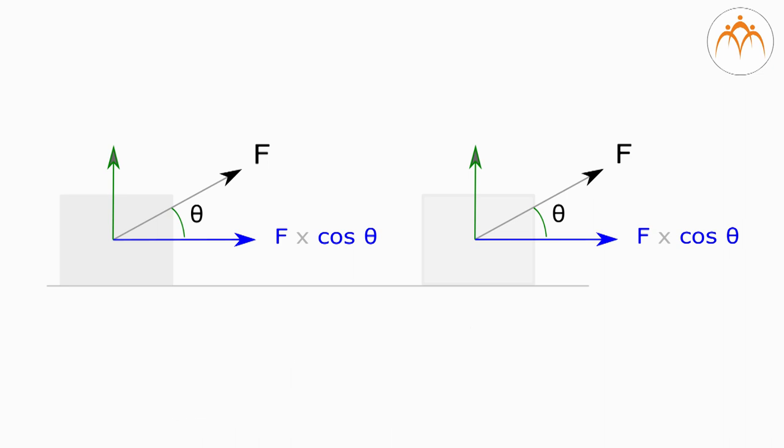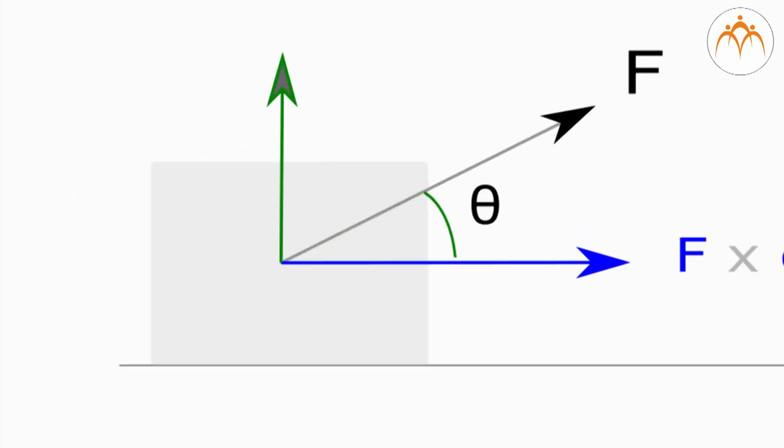Where W is equal to work done, F is the force exerted, S is equal to the displacement caused by the force, and theta is the force displacement angle. This equation assumes that the force is constant both in magnitude and in direction relative to the displacement at all times.